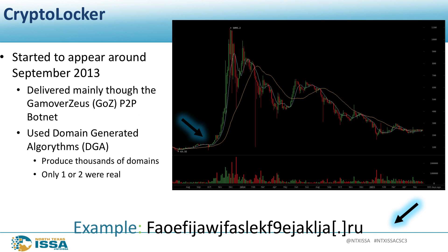That takes us to CryptoLocker, which came into the scene around 2013. This particular variant spread through the GameOver Zeus botnet. The Bitcoin price went from about $250 all the way up to $1,100 in just a few months — a lot of that due to ransomware, in particular CryptoLocker. It used a method of propagation called the DGA, Domain Generation Algorithm, which would create a long string of characters and register that as a domain name. Only one or two of the thousands created were legitimate domains. You can tell a malicious domain by the .ru extension — the majority of ransomware right now is propagated through Eastern Europe.